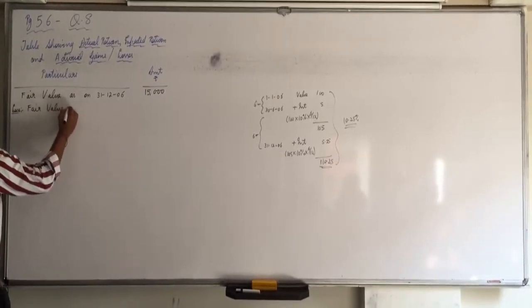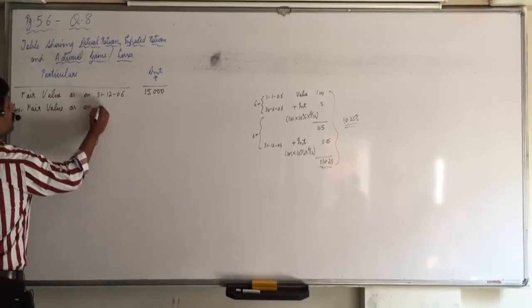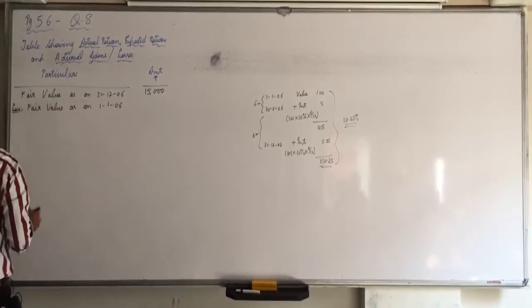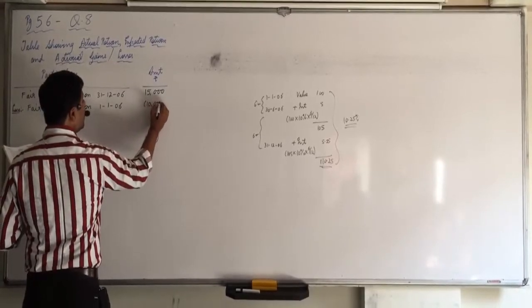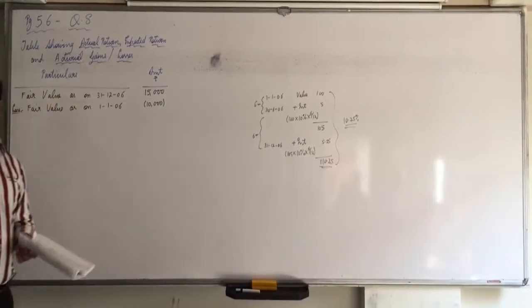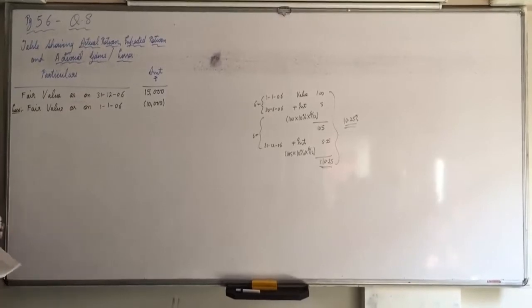From that we have to minus fair value at the beginning means as of 1-1-2006. That is 10,000. Write it in bracket, you have to minus it.